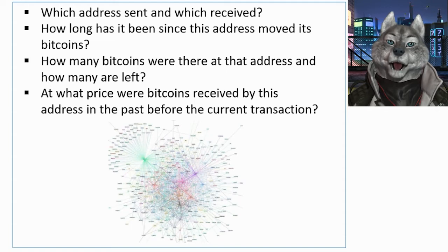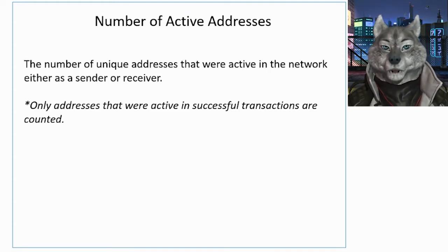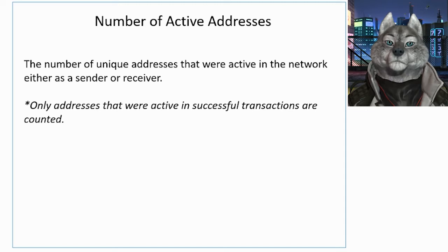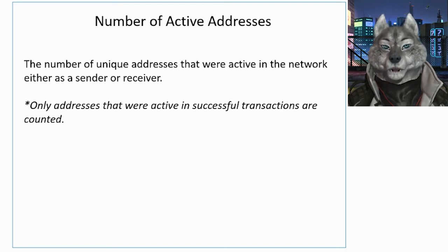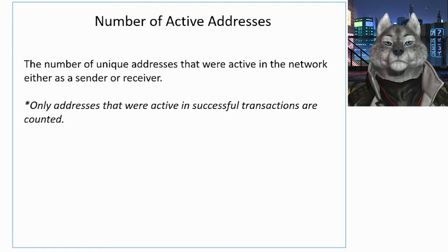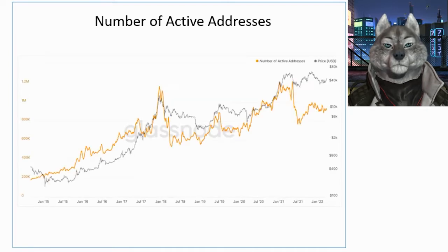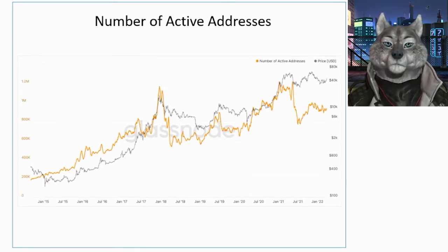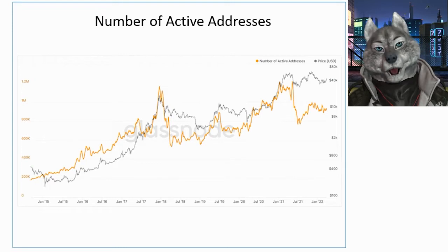Let's start with a very simple indicator to make it easier. The number of active addresses counts the total amount of addresses that have sent or received Bitcoin. If we select the daily chart period, it means the indicator will show the total number of active addresses on each day. In the short term this indicator is useful to reveal sudden retail interest or disinterest, while in the long term it signals the level of adoption.